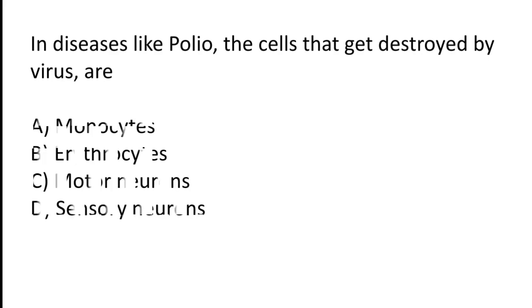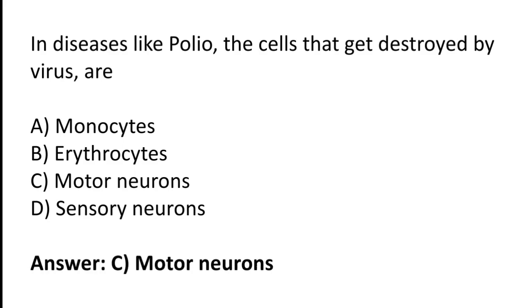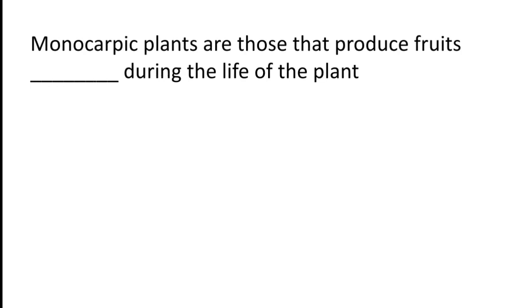In a disease like polio, the cells that get destroyed by the virus are: monocytes, erythrocytes, motor neurons, or sensory neurons? The correct answer is option C — in polio, the cells that get destroyed by the virus are motor neurons.